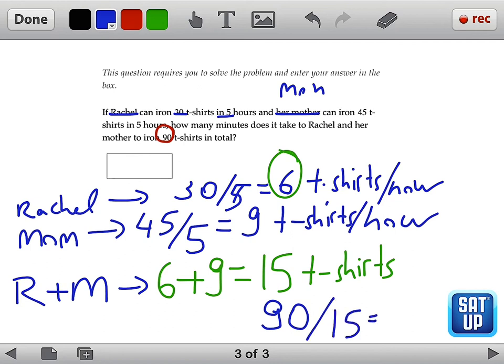So 15, I think this is 6, you can also use your calculator in this section, but you should be able to get this pretty quick. So if Rachel and her mom work 6 hours together, then they would be ironing 15 t-shirts every hour. And 6 times 15 would give us 90 t-shirts that required to be ironed. So the correct answer is 6.